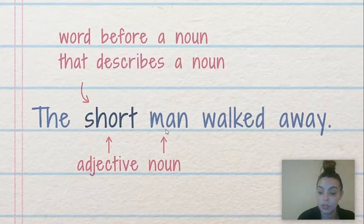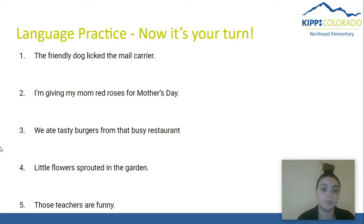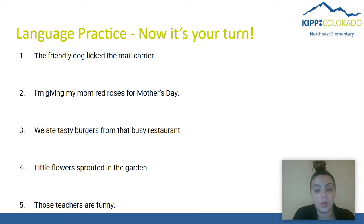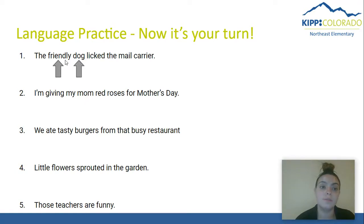Now it's your turn to practice. Here I have five sentences. As I read them, I want you to say what word is the adjective and what word is the noun. Number one: 'The friendly dog licked the mail carrier.' An adjective is a describing word — where is the describing word or adjective in this sentence? Awesome job! Friendly is describing our noun in the sentence, which is 'dog.' What kind of dog? The friendly dog. So our adjective is describing our noun.